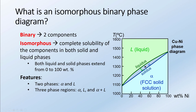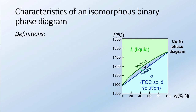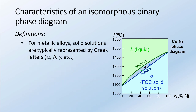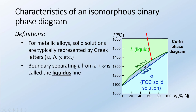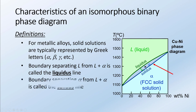Let's talk a bit more about some characteristics of an isomorphous binary phase diagram. Any time we're working with metallic alloys, solid solutions like alpha are typically represented by the Greek letters alpha, beta, gamma, etc. There's also a boundary line that separates the liquid-plus-alpha phase from the completely liquid phase — we call that the liquidus line. Similarly, there's a boundary that separates the liquid-plus-alpha phase from the complete alpha solution — we call that the solidus line.